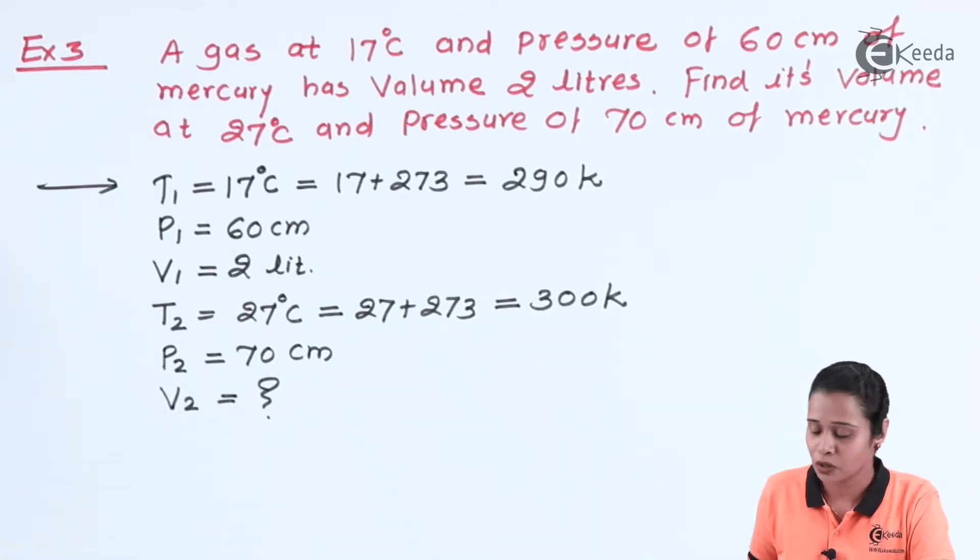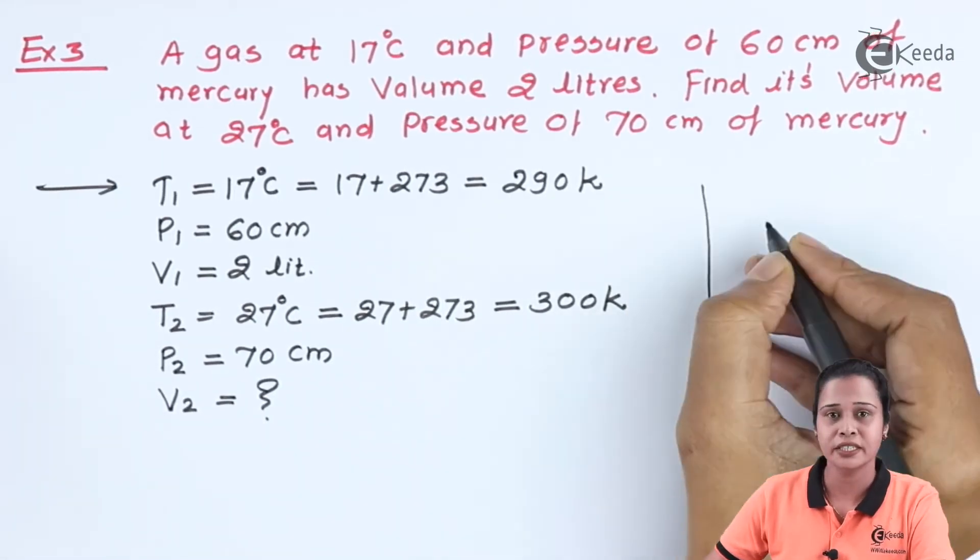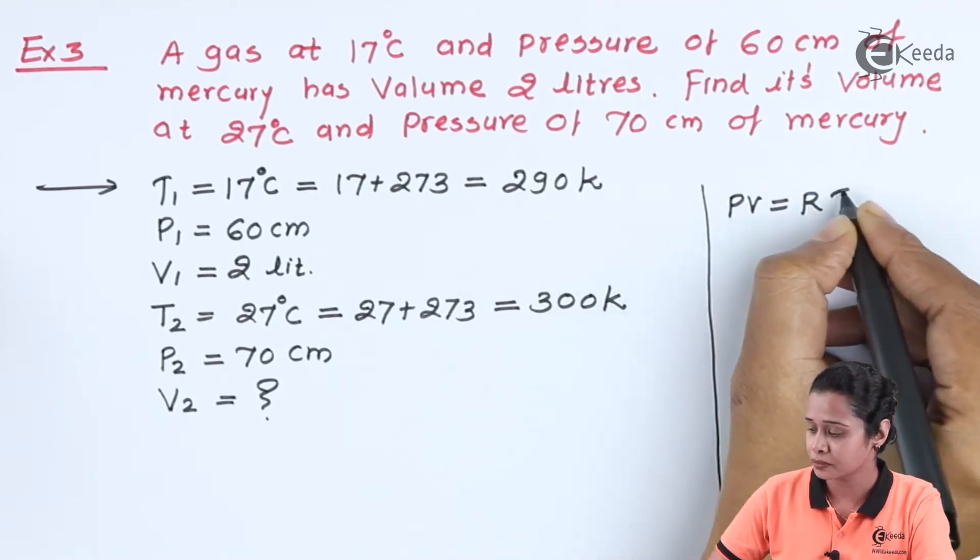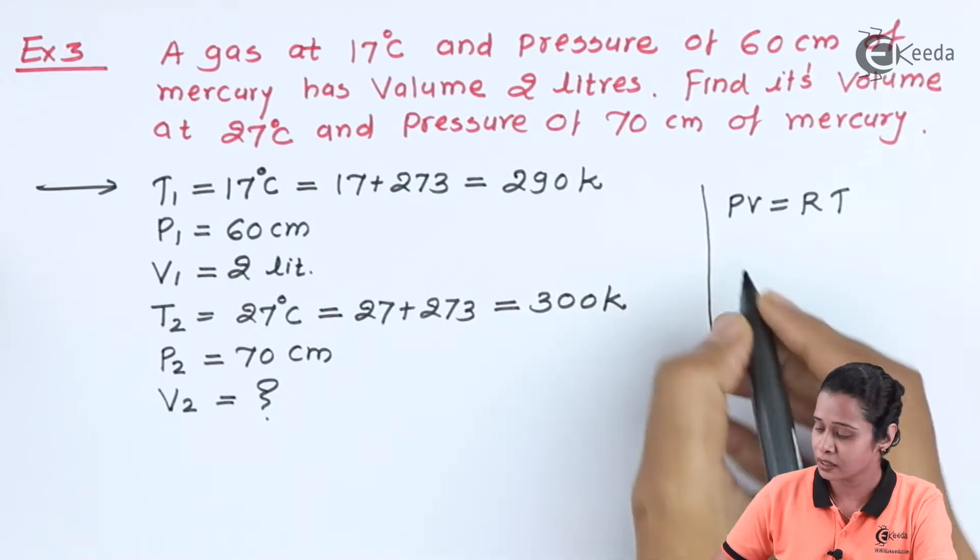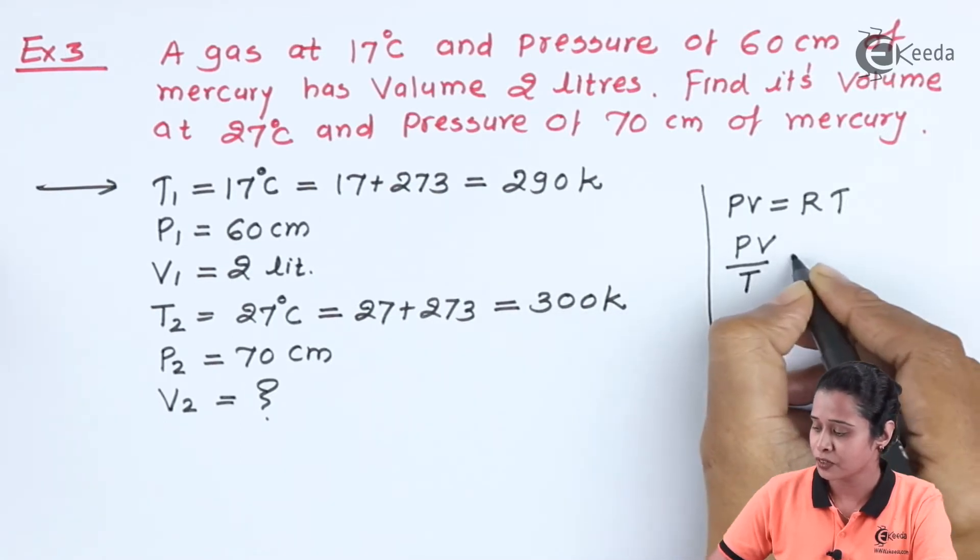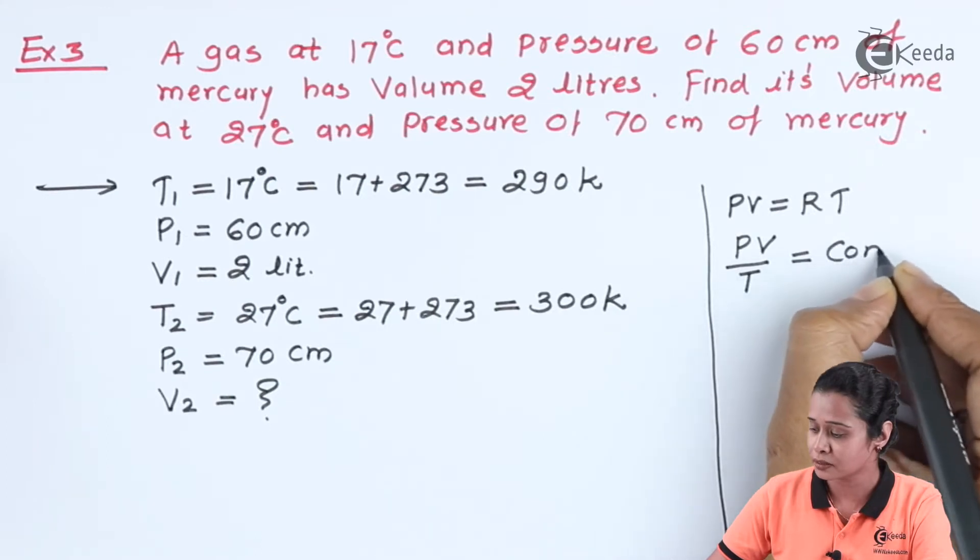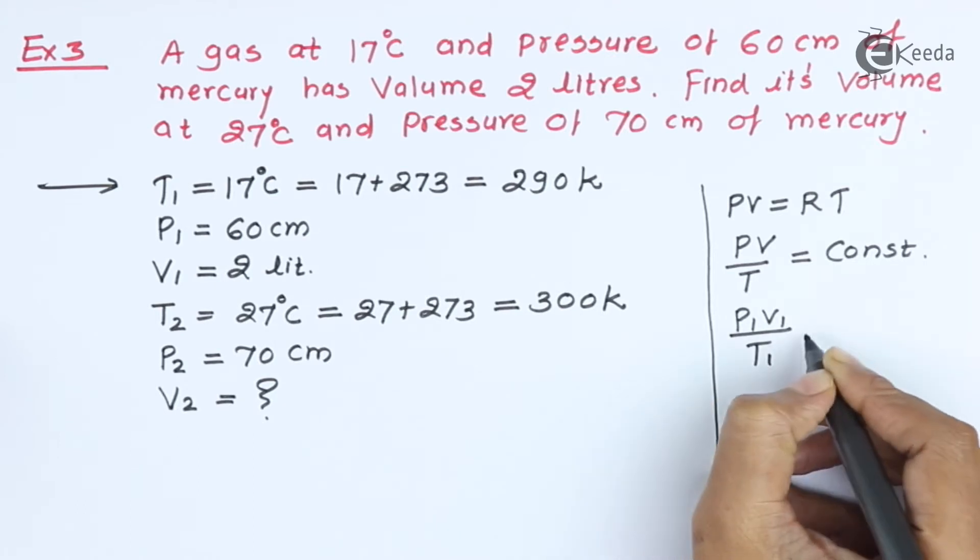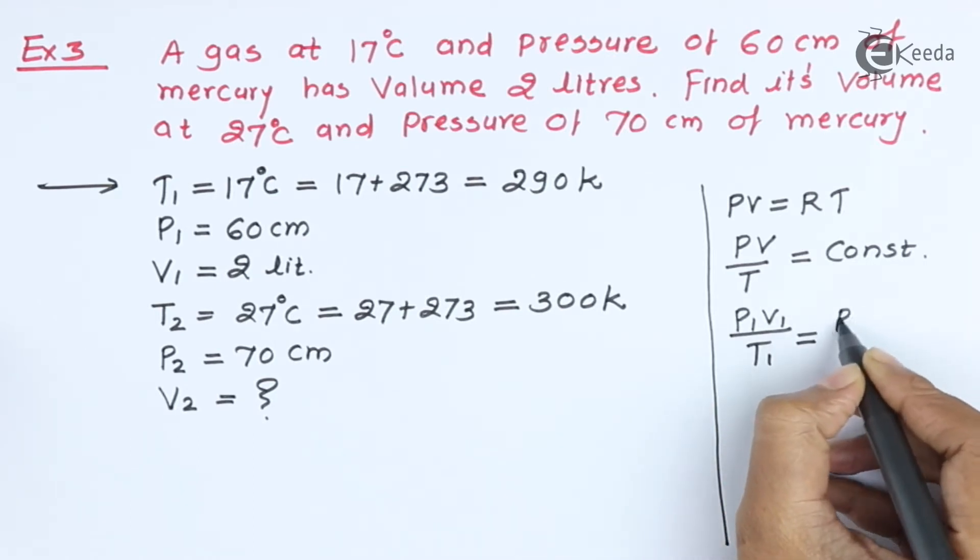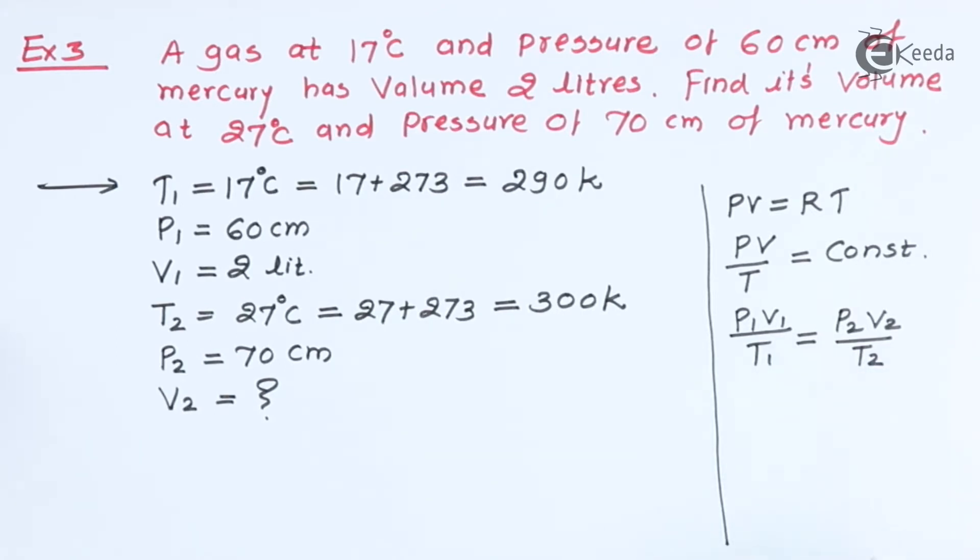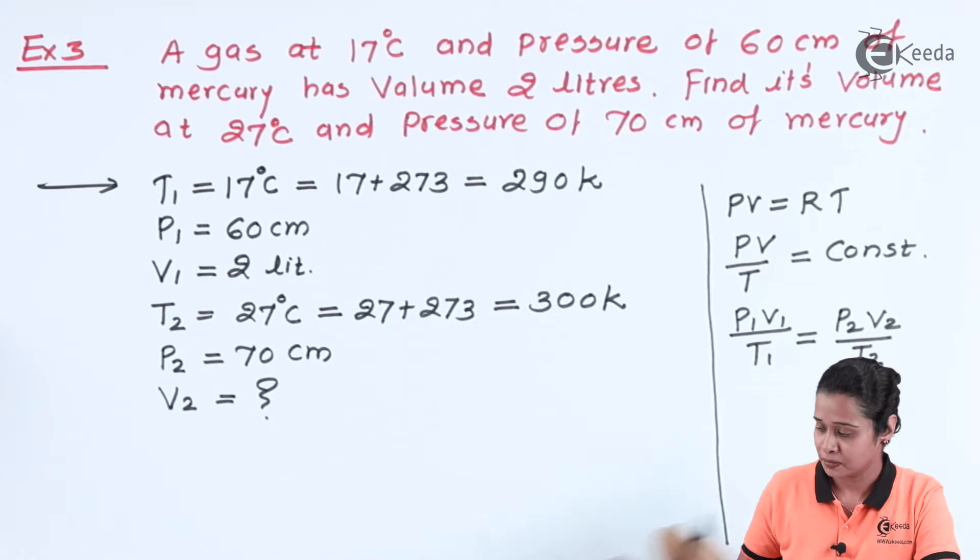We know gas law, that is PV is equal to RT. Hence, we can write PV upon T which is equal to constant. Hence, we can write P1 V1 by T1 is equal to P2 V2 by T2.